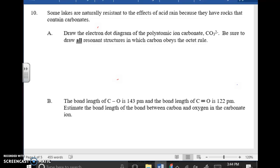And number ten. Draw the electron dot diagram of the polyatomic ion carbonate, CO3 with a minus two charge. Be sure to draw all resonance structures in which carbon obeys the octet rule. Well, let's just be very simple about this. First of all, when you have a resonance structure, that implies that a molecule has at least one double bond. Or maybe it's better to say, has one double bond and the rest single bonds. So what that means is, if I want to draw the dot diagram of CO3 with a minus two charge, I have the same approach as previously. I draw a carbon in the center. That's the central atom. I draw the O's around it.